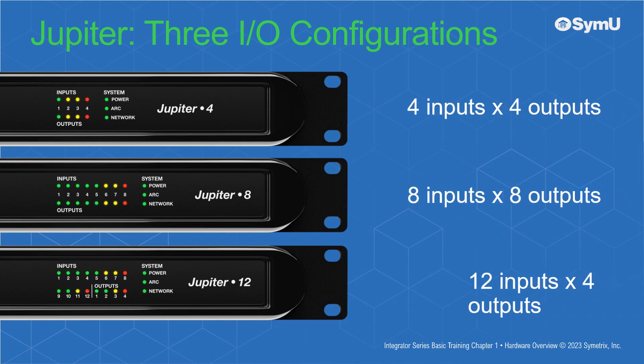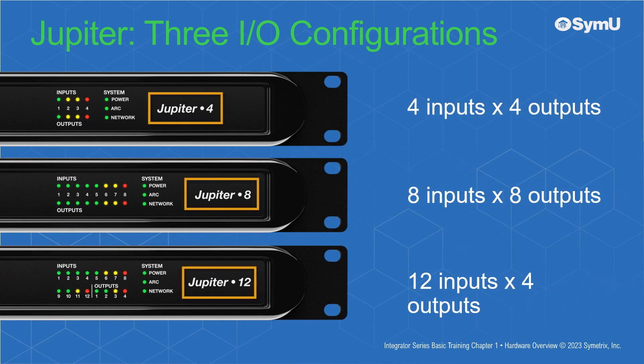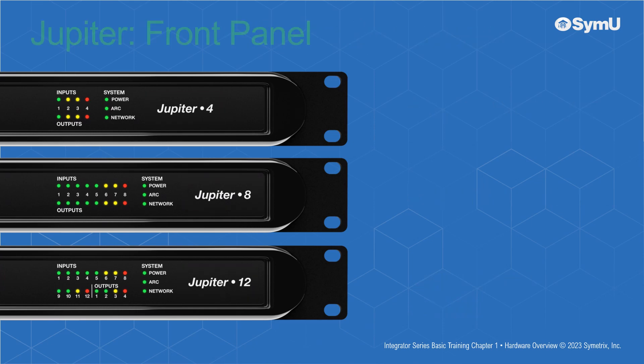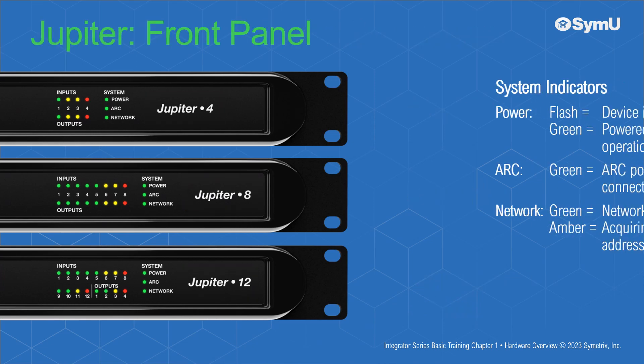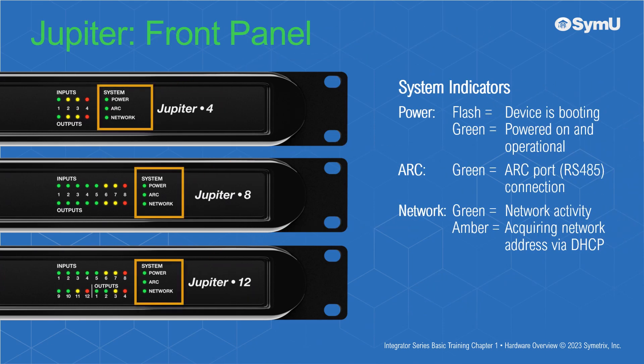Let's look at the front panel of the Jupyter where the I/O configuration is clearly marked. The right bank of system LEDs indicate power, ARC, and network connections. The power LED will be solid green to indicate the device is powered on and fully operational, or flashing while the device is booting. A green ARC LED illuminates to indicate that there is an ARC port connection, or RS-485. The network LED illuminates green to indicate network or Ethernet activity, or amber to indicate acquisition of a network address in DHCP mode.